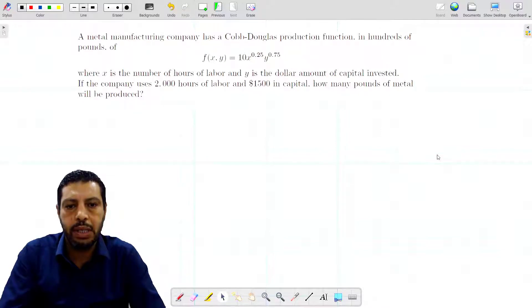f(x,y) equals 10 times x to the power of 0.25 times y to the power of 0.75. This is called a Cobb-Douglas function, where x is the number of hours of labor and y is the dollar amount of capital.